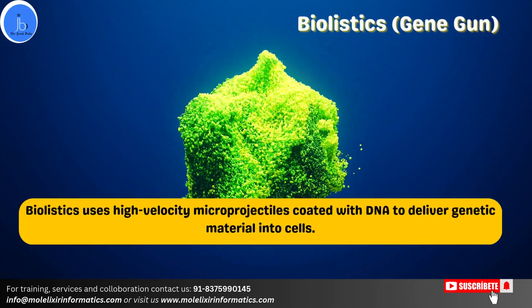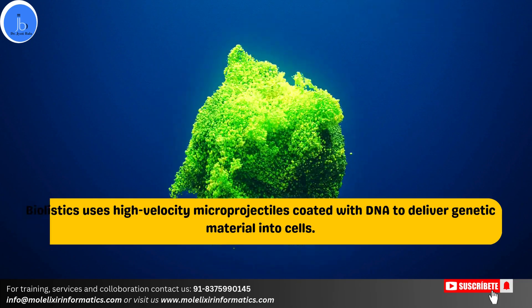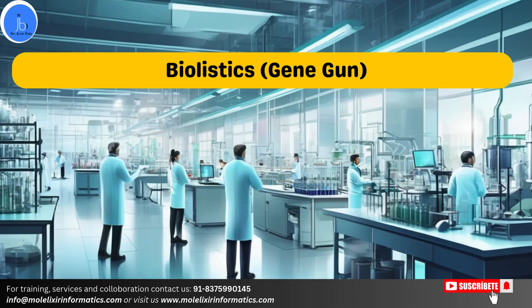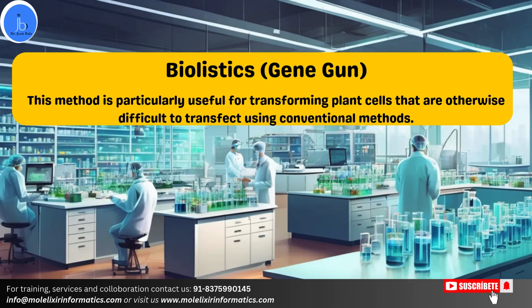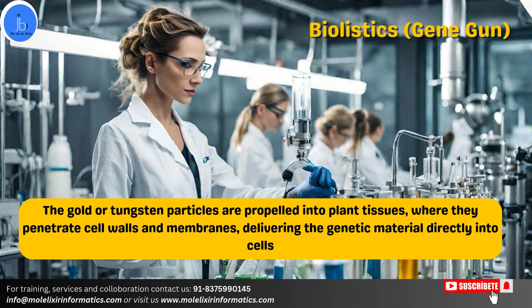Another significant technique is the gene gun, which uses biolistics. Biolistics uses high-velocity micro-projectiles coated with DNA to deliver genetic material into cells. This method is particularly useful for transforming plant cells that are otherwise difficult to transfect using conventional methods. Gold and tungsten particles are propelled into plant tissue where they penetrate the cell wall and membrane, delivering the genetic material directly into the cell.